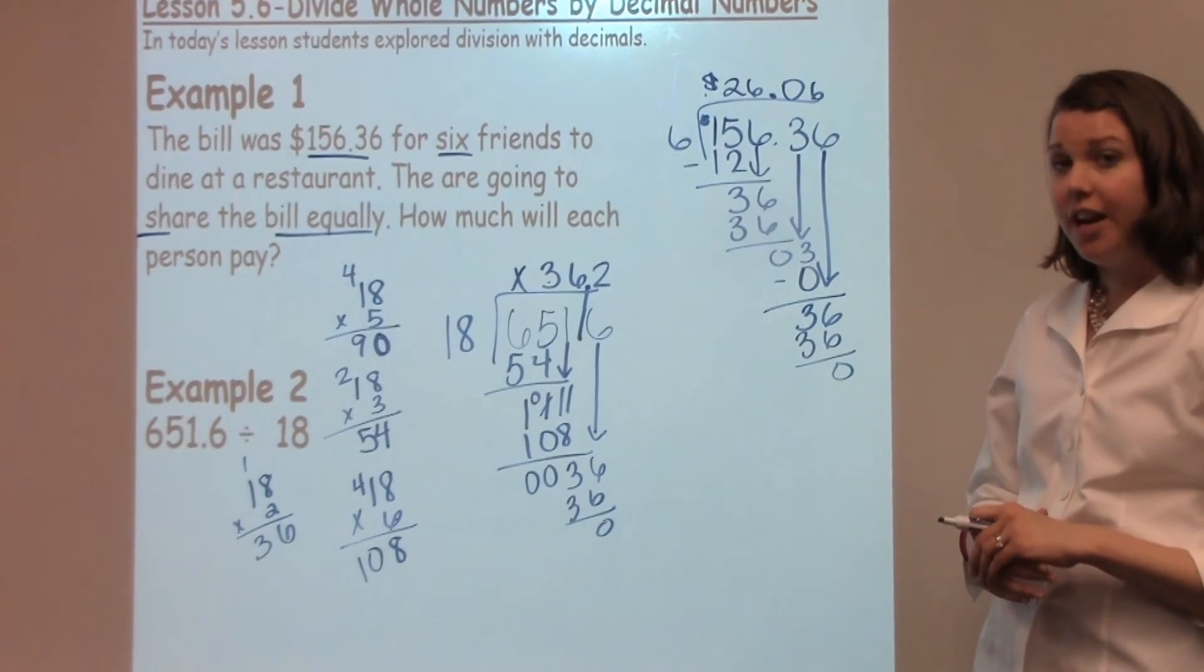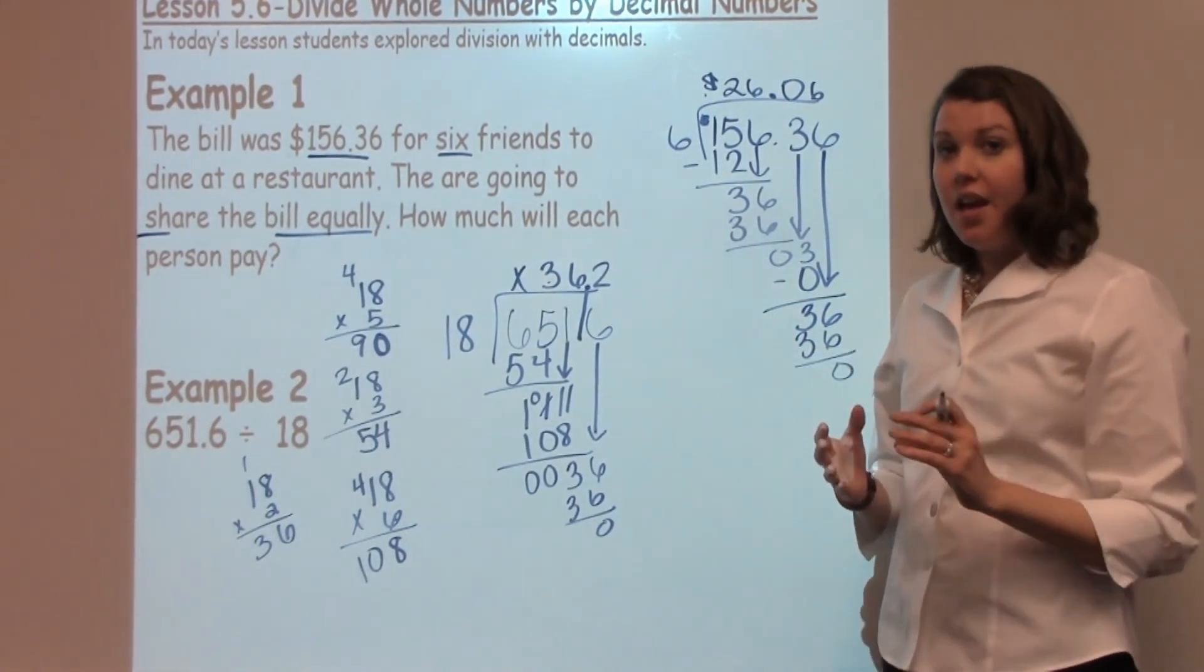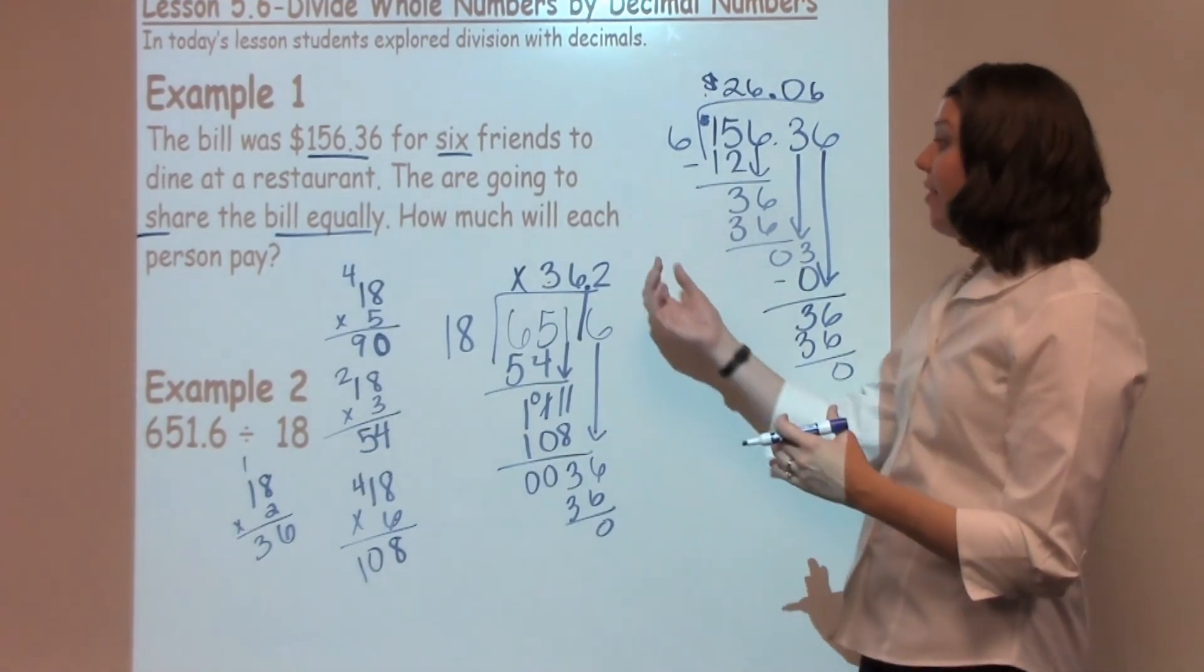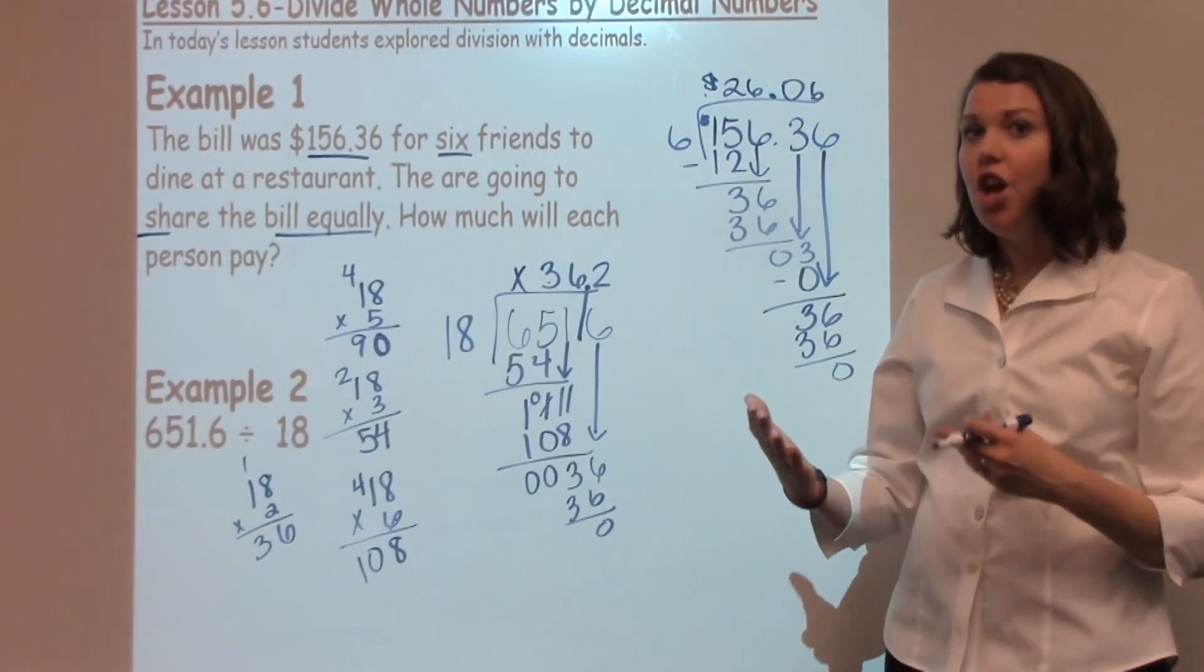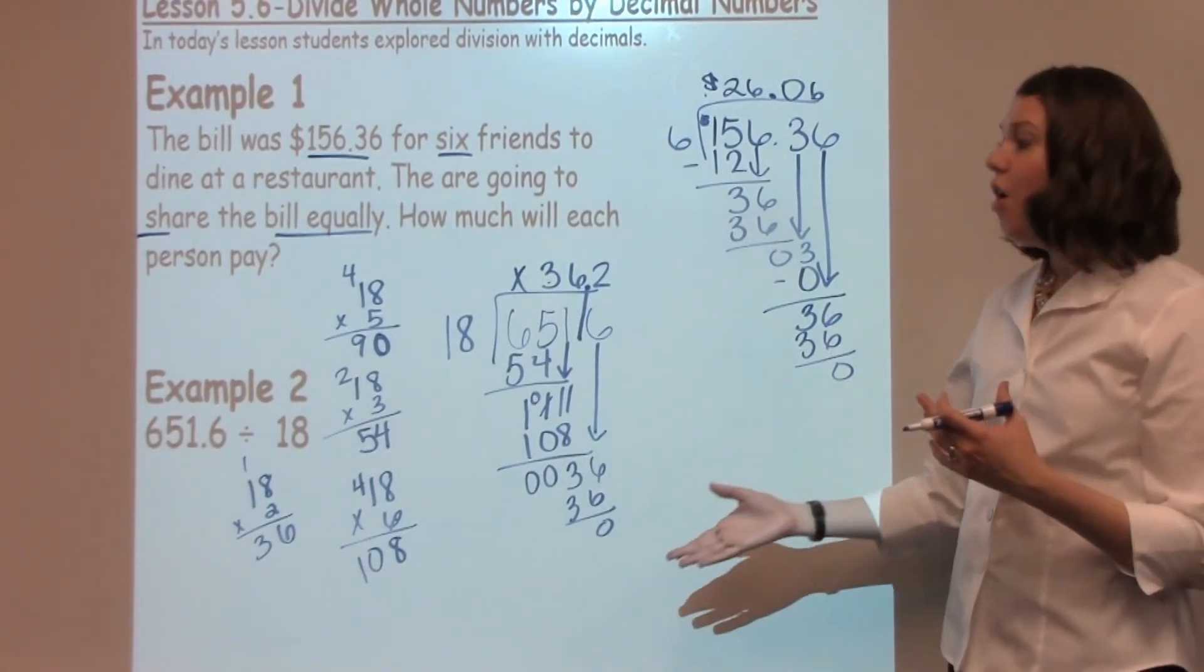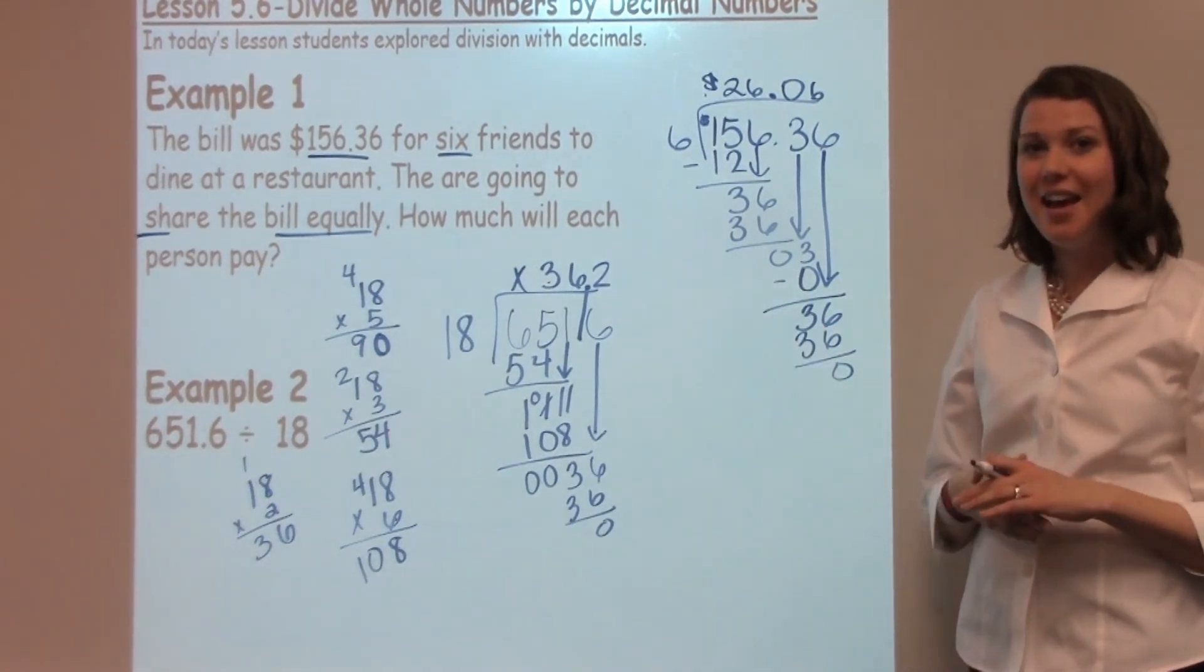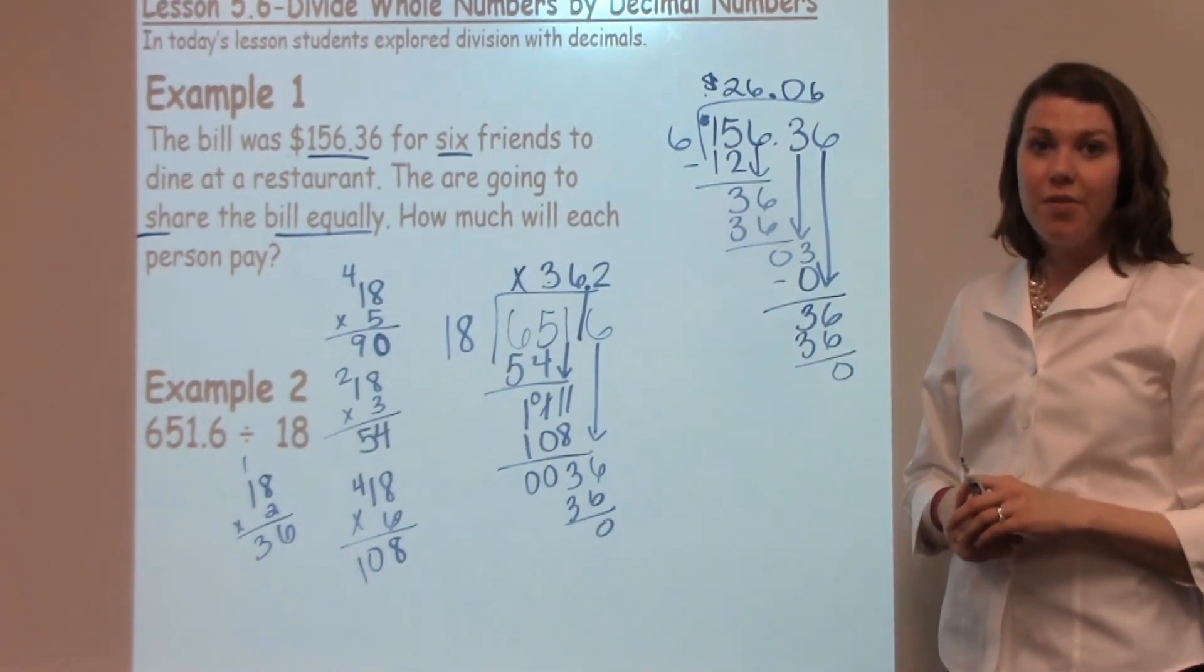Another common mistake that we see in fifth grade is that students try to have fractions and decimals combined. Make sure that if you're working with a decimal number, you need to only have a decimal answer. If you have a fraction, you have improper work somewhere in your problem, or you need to keep bringing down a zero until it comes to the ending number or it becomes a repeating decimal.